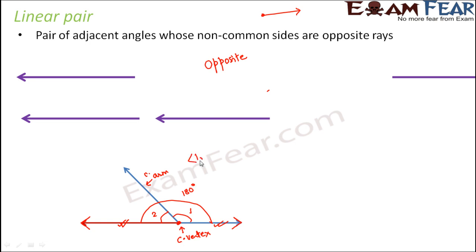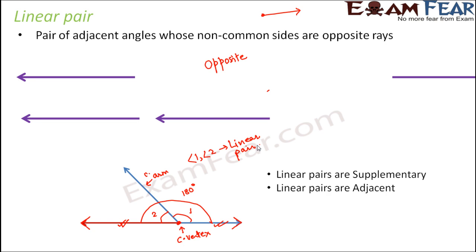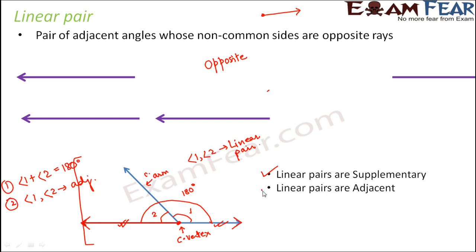In this case, angle one and angle two form a linear pair. For two angles to form a linear pair, they must satisfy two conditions: first, they should be supplementary, meaning angle one plus angle two equals 180 degrees; and second, they should be adjacent angles. If both conditions are satisfied, the two angles are said to be a linear pair.